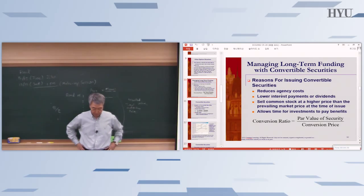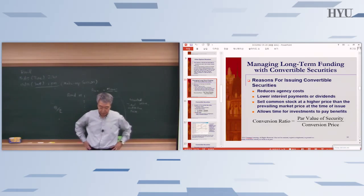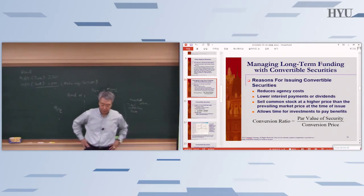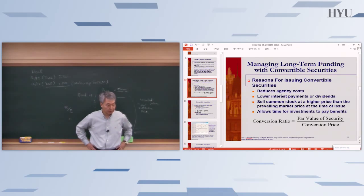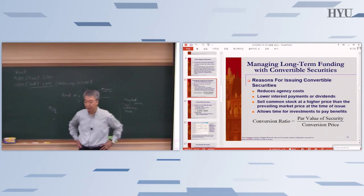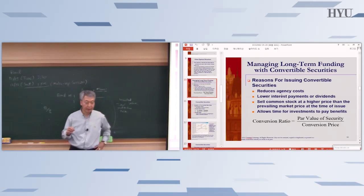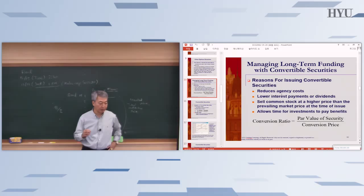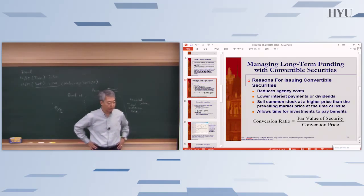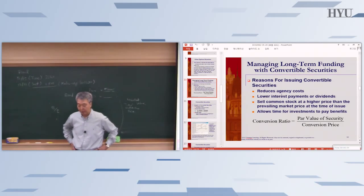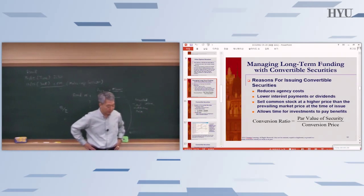Another purpose is to lower interest payments or dividends on preferred stock. When bondholders or preferred stockholders know they can share the company's profit, they may accept a lower interest payment or lower dividend. By including this convertible feature, the company can offer about 3% lower interest compared to non-convertible bonds.